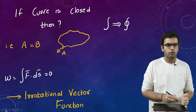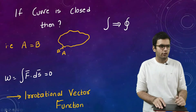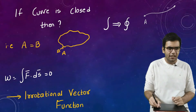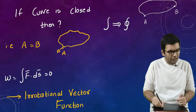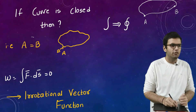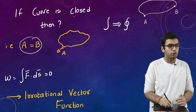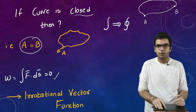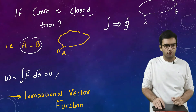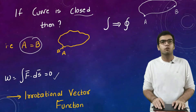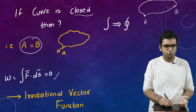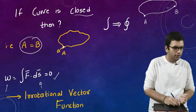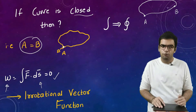Consider a closed curve — one that starts and ends at the same point, so A equals B. The line integral of a closed curve is always zero. In physics this makes sense: if you start walking from a point, complete one circle, and return to the same point, displacement is zero, so work done is zero. Therefore the line integral of a closed curve is zero.